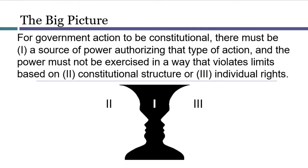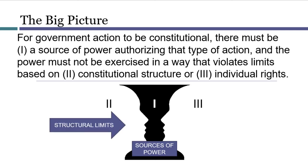All of this combines to give us an overall diagram that has three parts. First, for a government action to be constitutional, there needs to be a source of power that authorizes that kind of action — represented by the vase. The source of power must not be used in ways that violate either of two types of limits. One set of limits are known as structural limits, such as separation of powers, federalism, or supremacy. Another set of limits are known as individual rights.